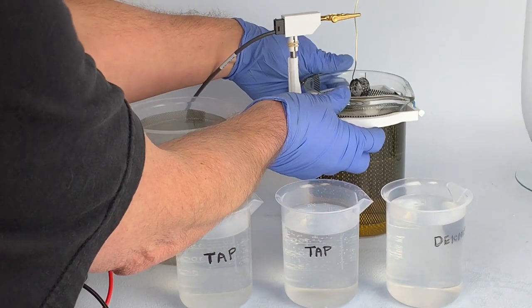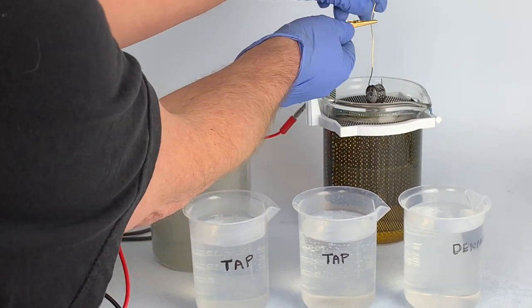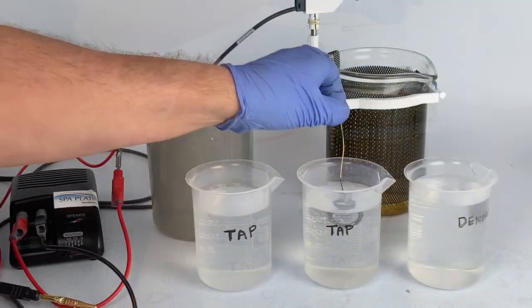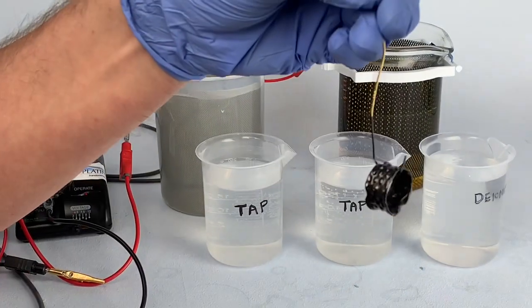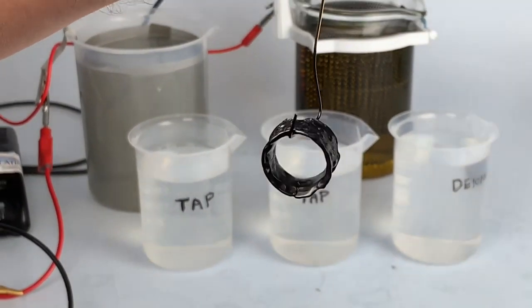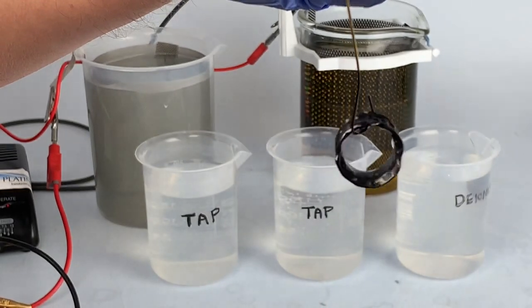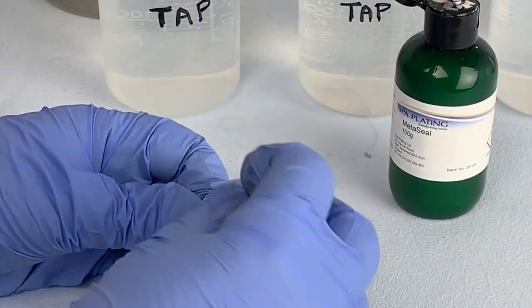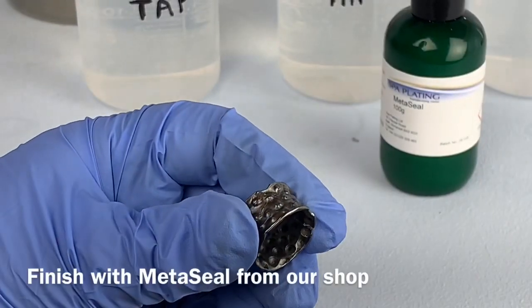Once the time's up and the plating is complete, remove the work and pass it through the rinse beakers again. Your work will be plated in a dense gun metal layer of black rhodium. You can finish the surface of the work by rubbing on some of our Metaseal.